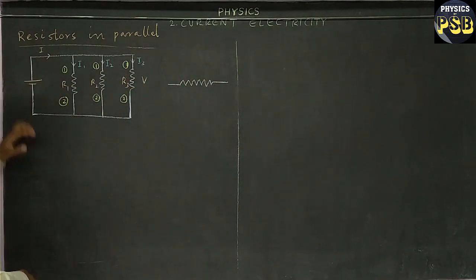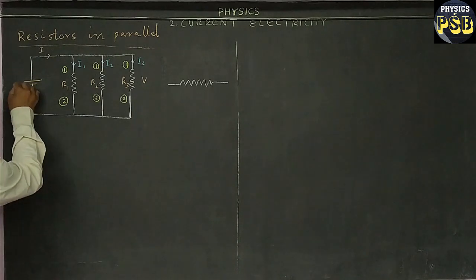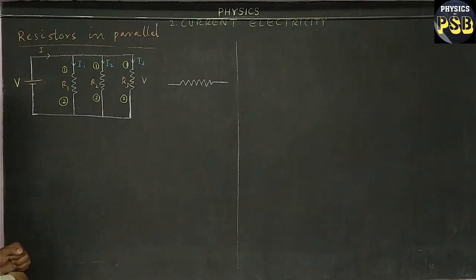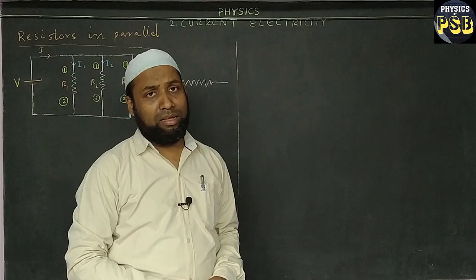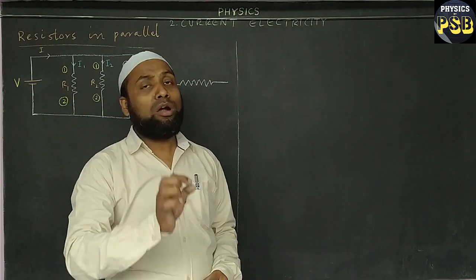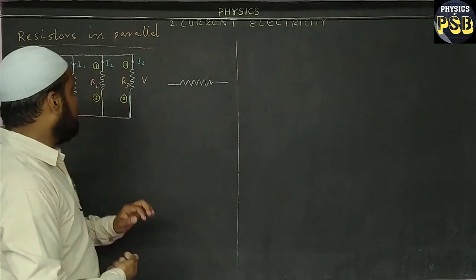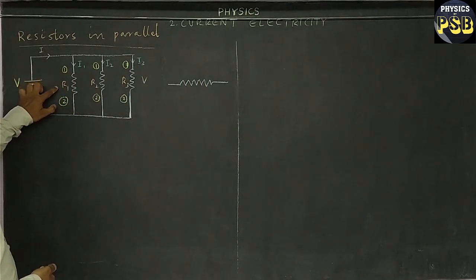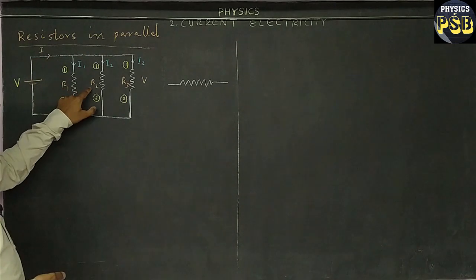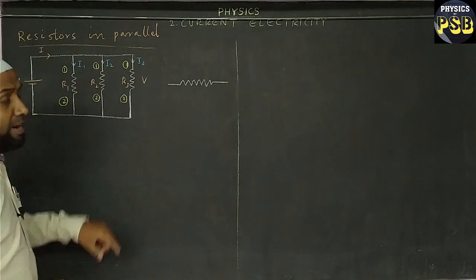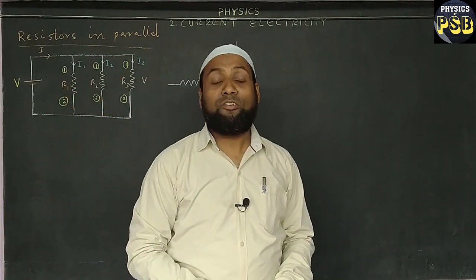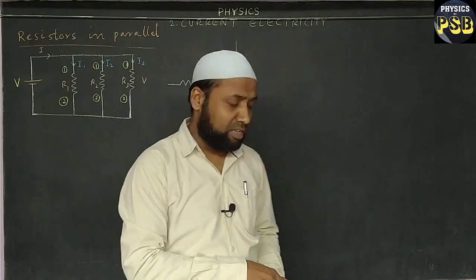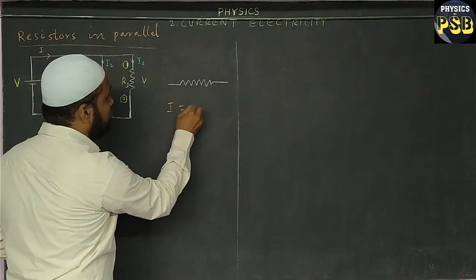Parallel to a cell that provides potential V across them. And in parallel combination, always remember the current will not remain the same. The current passing through R1 is I1, current passing through R2 is I2, and current passing through R3 is I3.